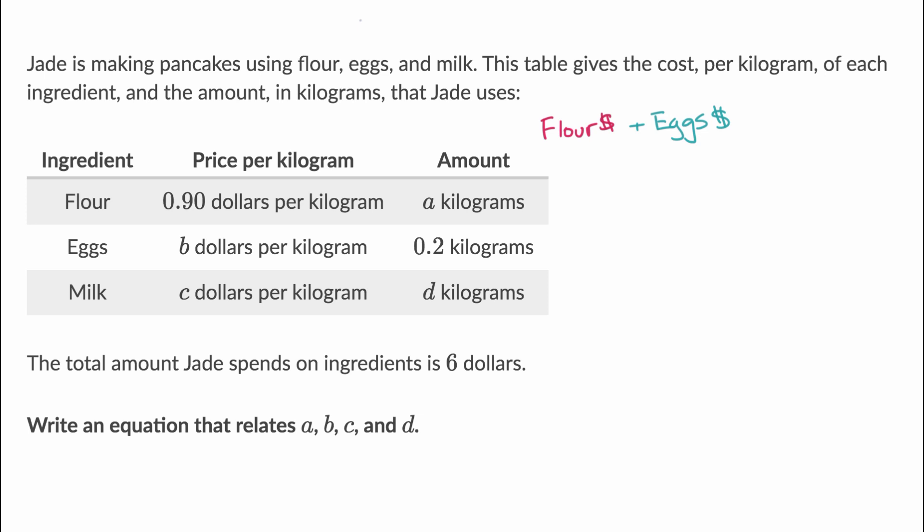Or the amount that Jade's gonna spend on eggs, plus the amount that Jade spends on milk, I'll call that the milk dollars, is going to be equal to the total amount, is going to be equal to $6.